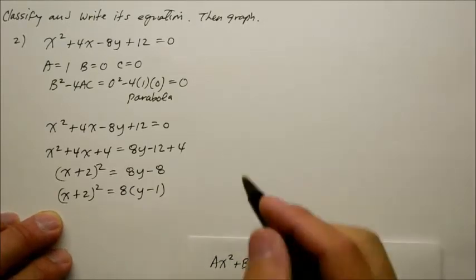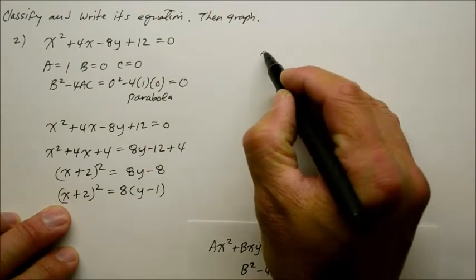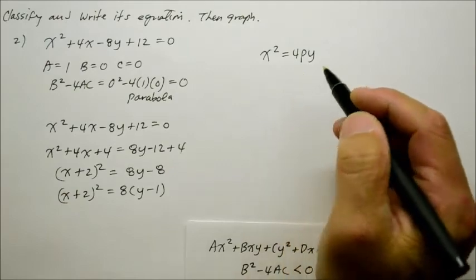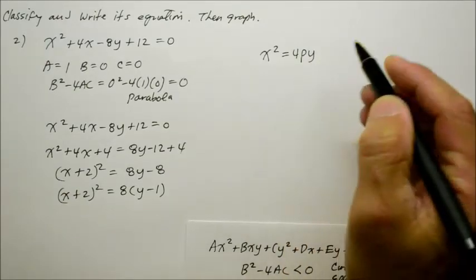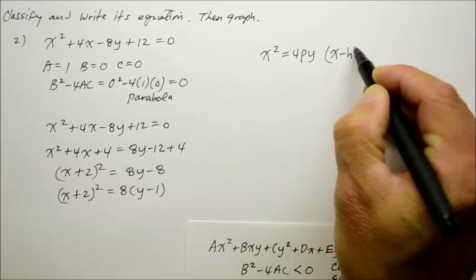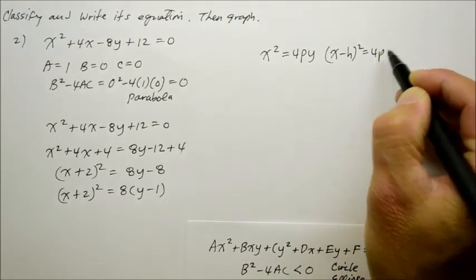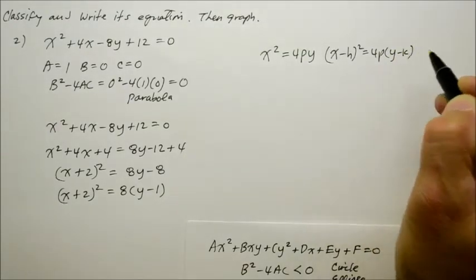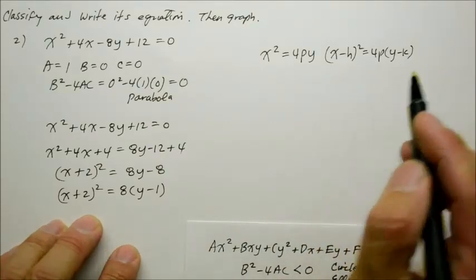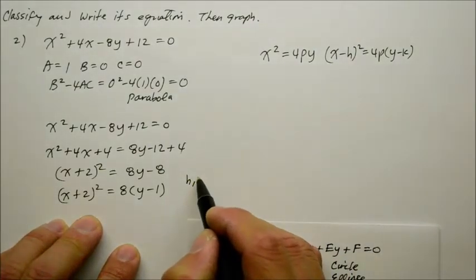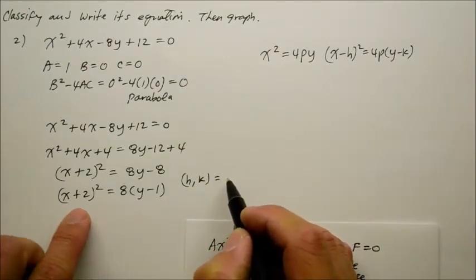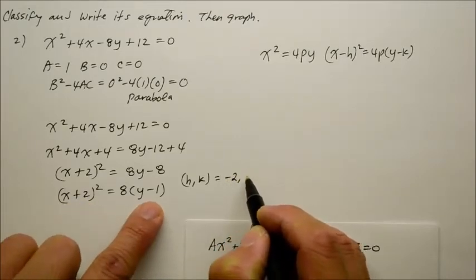And since this one is a function of x, meaning it's going to be x² equals 4py, the basic form, and then the standard form is now (x-h)². Remember the h follows the x all the time? Is equal to 4p(y-k). Okay? So looking at the standard form over here, we could identify the fact that now the h and the k, the translated vertex, is now at the inverse of 2, which is negative 2 and 1.